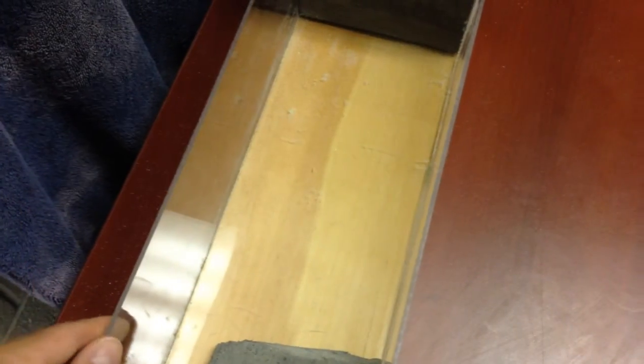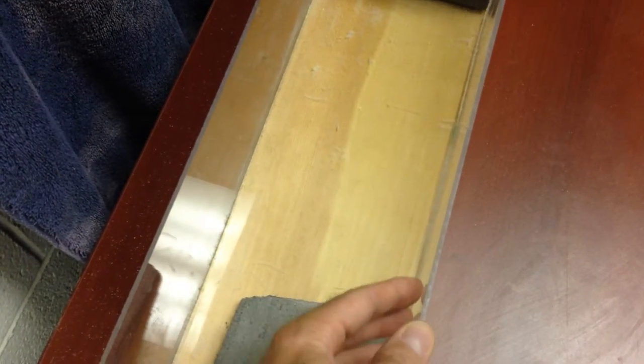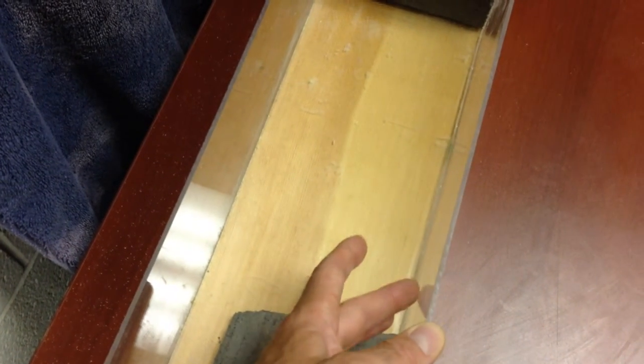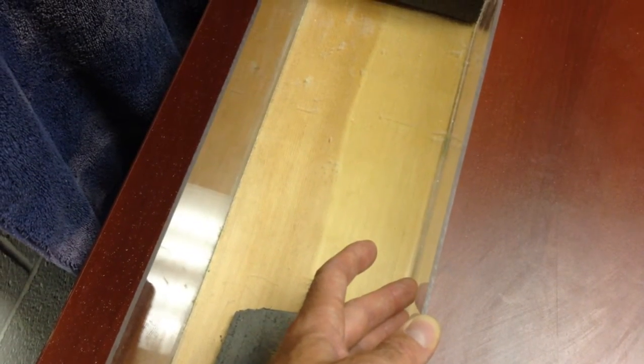Now sometimes when this plexi is shipped and purchased, it's covered with an adhesive backing, which I presume is some sort of protective backing. Once that's removed that can leave a sticky film on the plexiglass, which produces a great deal of friction with the layer pack.